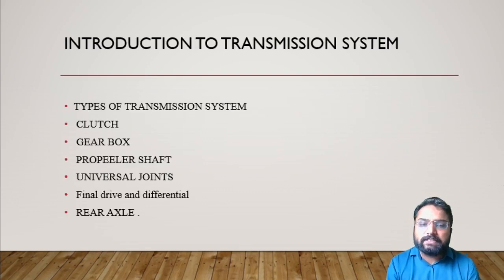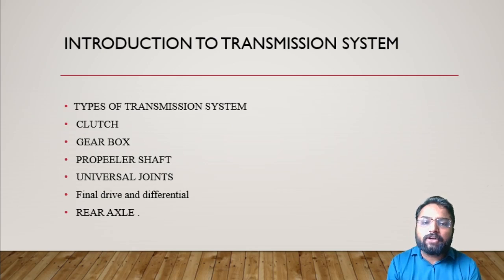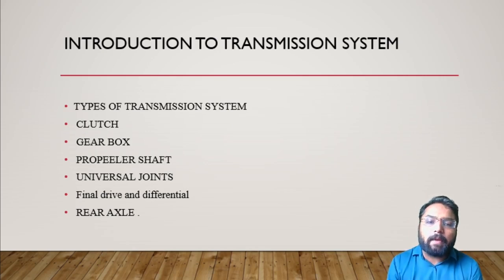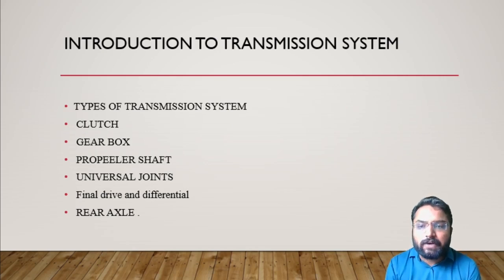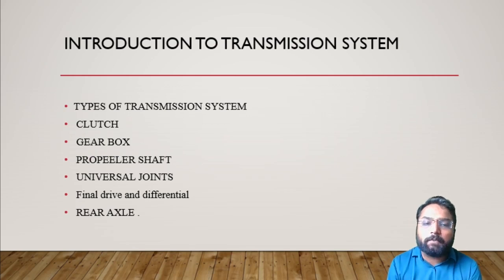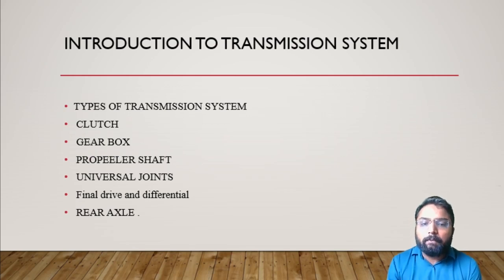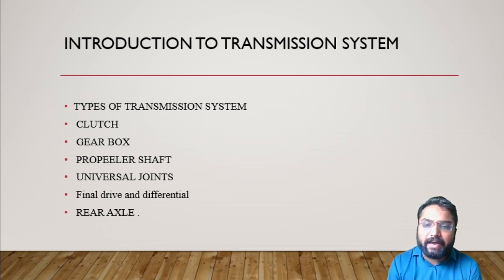What are the different parts of this transmission system? There are multiple parts: it starts from the clutch, gearbox, propeller shaft, universal joints, final drive and differential, and ultimately the rear axle.